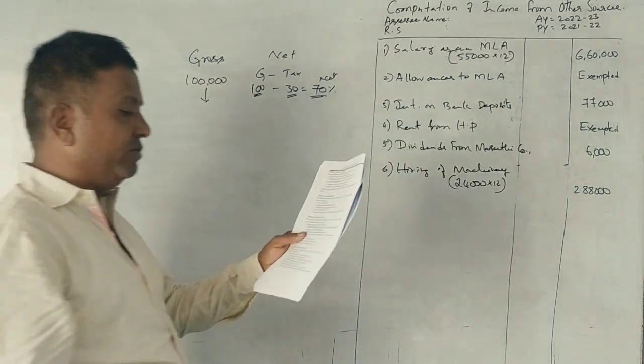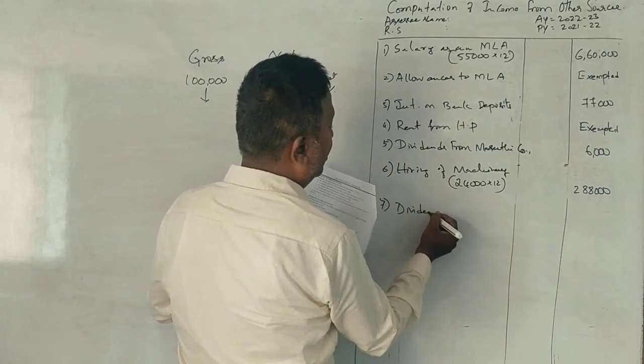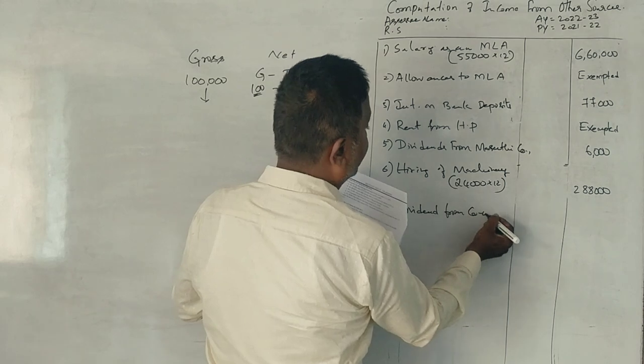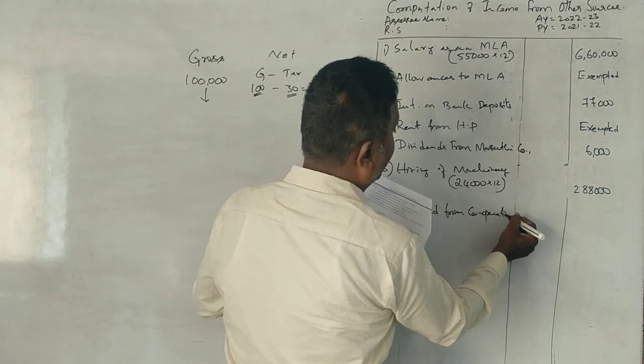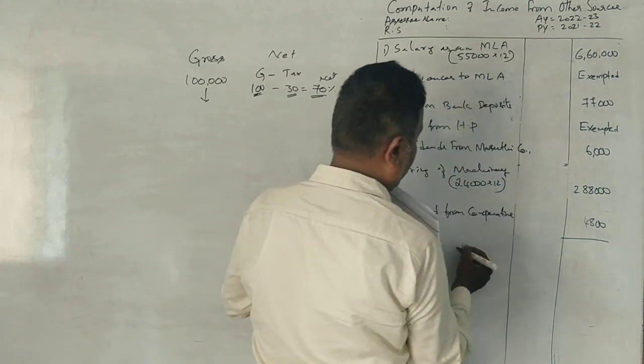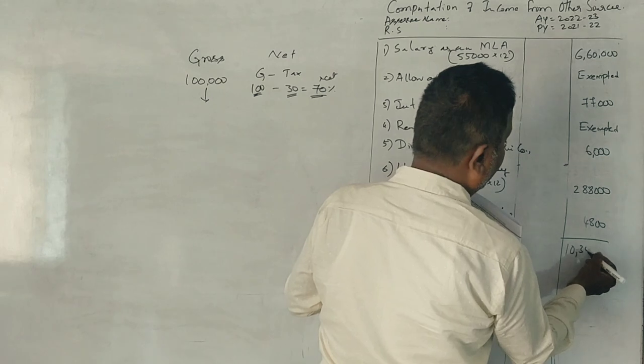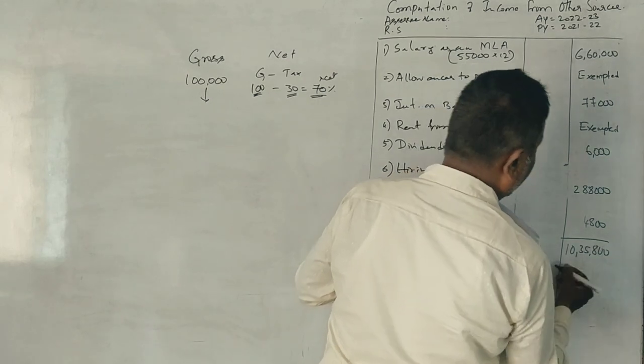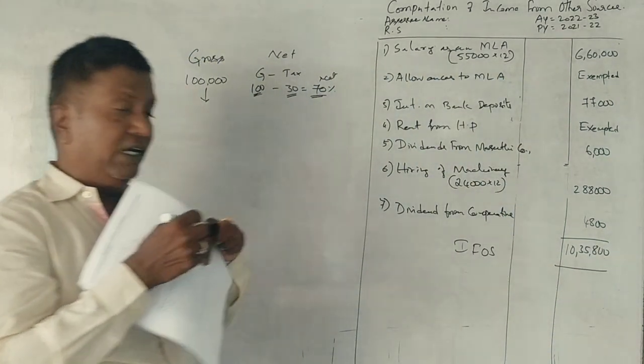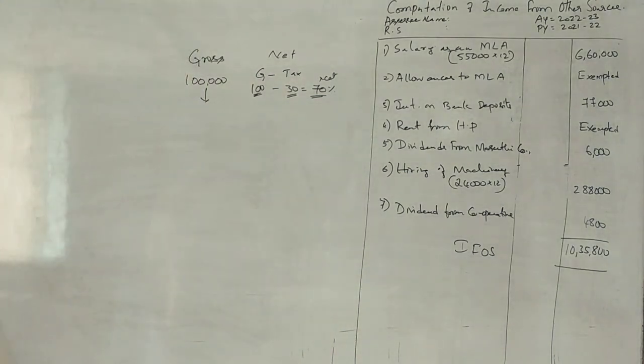Dividend from co-operative society. Fully taxable. 4,000, 4,800. Master Alba, yes sir, 25,000, 25,800. This is fully taxable under the head income from other sources. 27,800, 29,800. 30,800. Thank you.